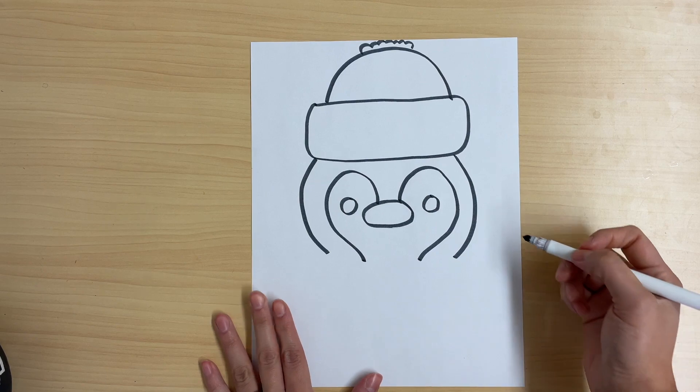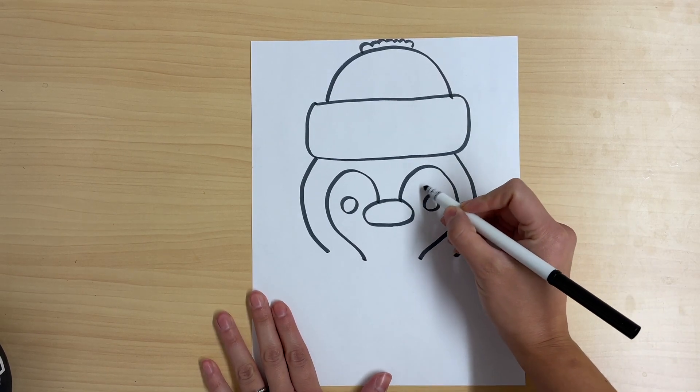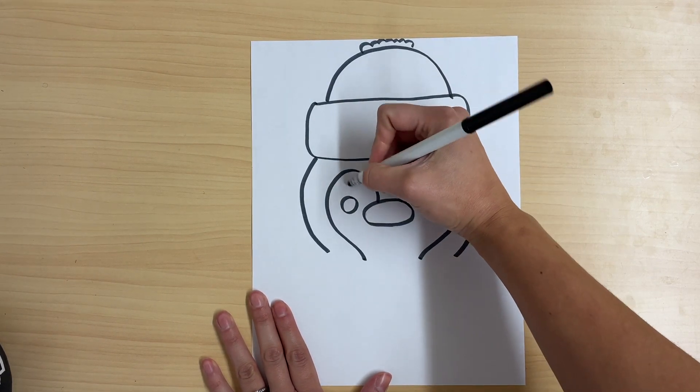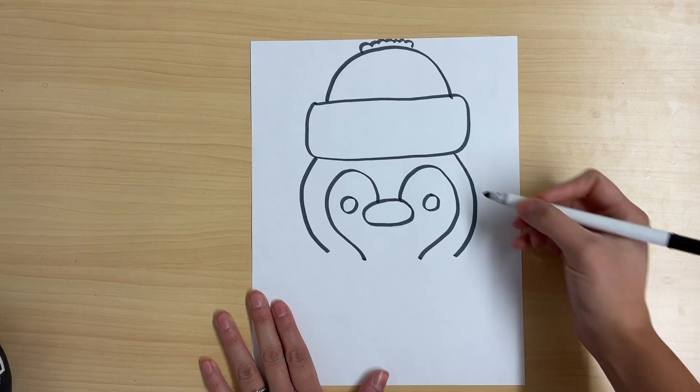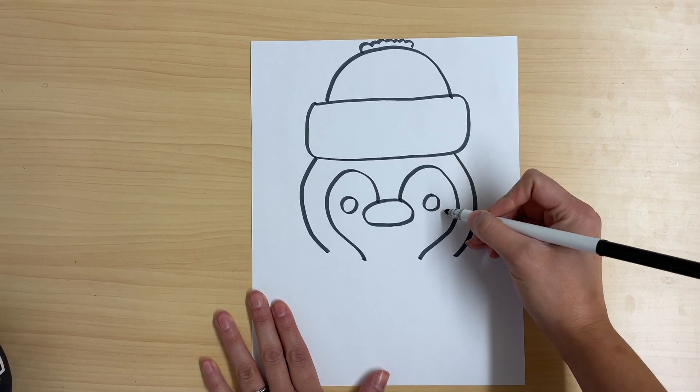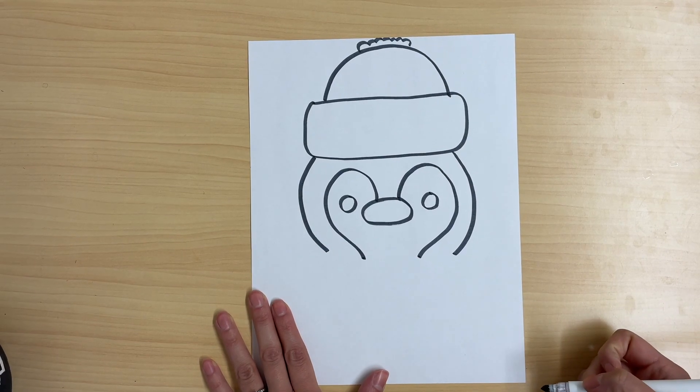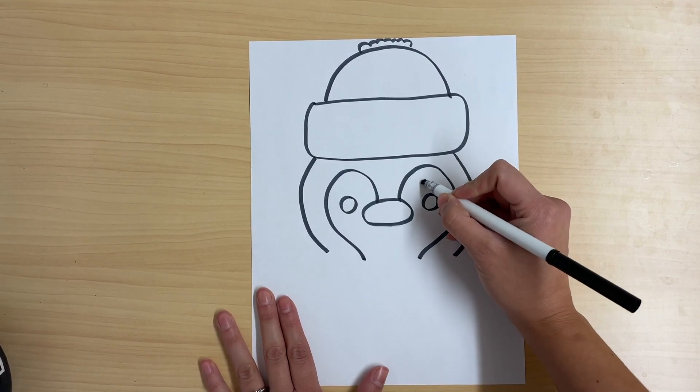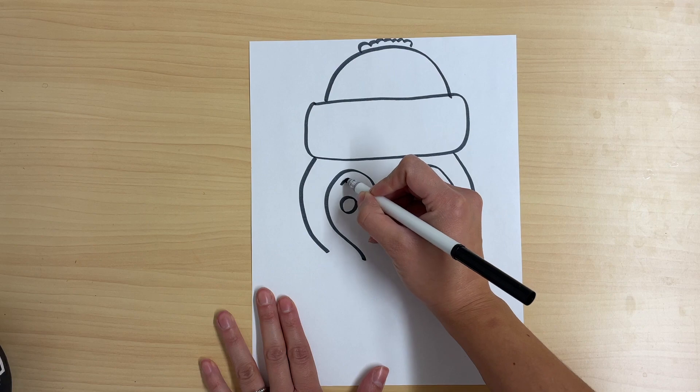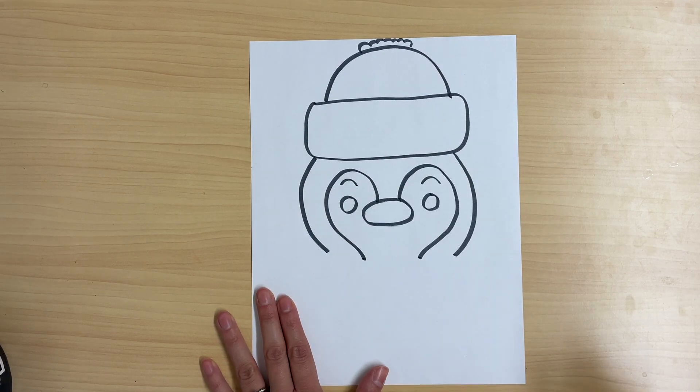So if they're angry, the eyebrows might be straight lines like this. If they're sad, the eyebrows might be curved going up like this. My penguin is going to be happy so I'm going to draw two high eyebrows like she's raising her eyebrows high.